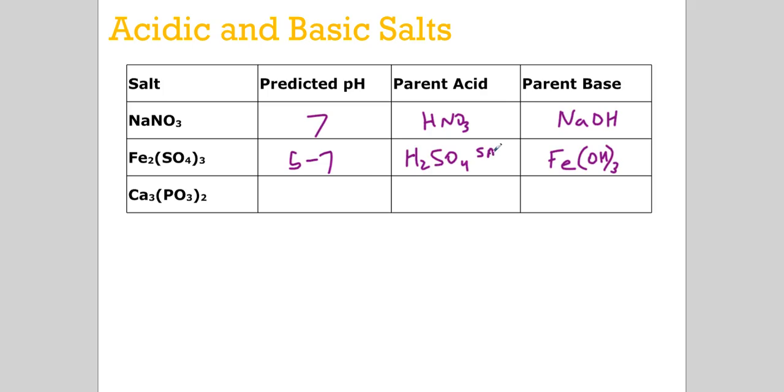Since we have a strong acid weak base system we would expect to have hydrogen ions remaining in solution as we formed iron three hydroxide. Therefore acidic system.